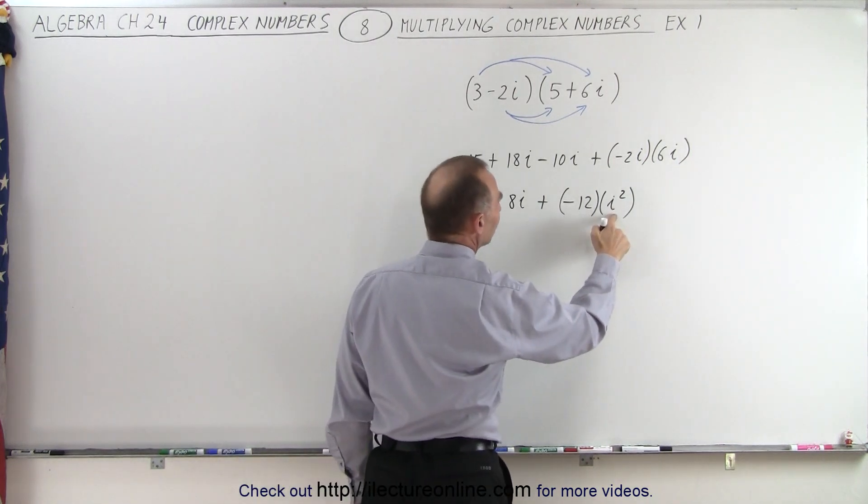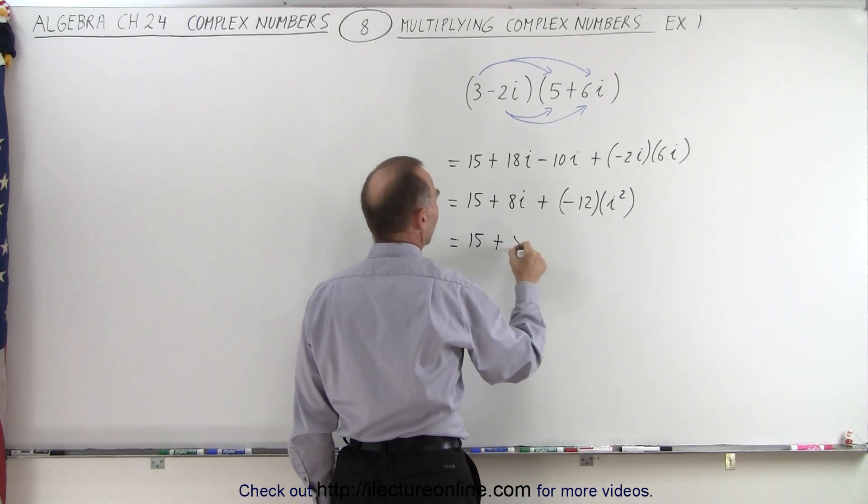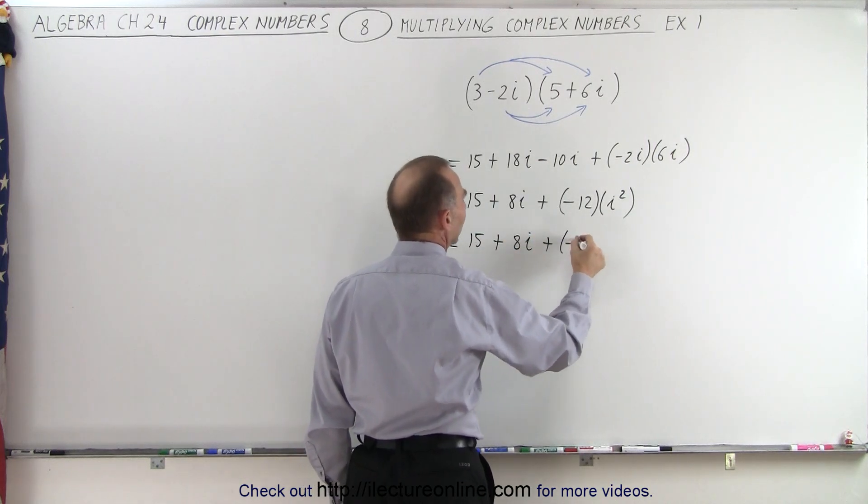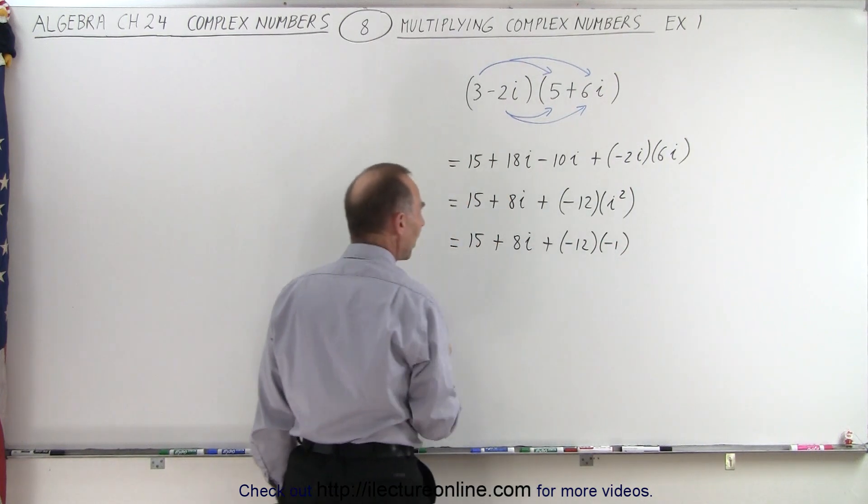And then we realize that i squared is the same as negative 1. So this becomes 15 plus 8i, plus a negative 12, multiplied times a negative 1. Of course, that becomes equal to a positive 12.